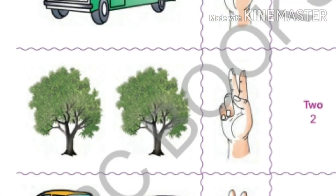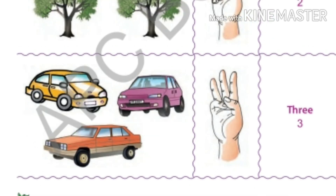How many trees are here? One, two. Two trees. Two fingers. And the spelling is T-W-O. Two.